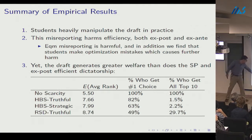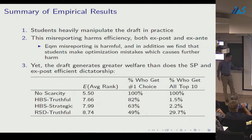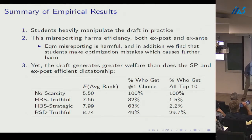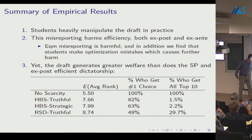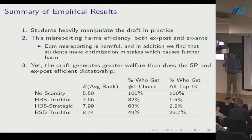Under the random serial dictatorship, average rank rises much further to 8.74, only 49% get their number one choice, and only 30% get their bliss point. This shows the sense in which strategic play harms welfare, and the sense in which the draft nevertheless outperforms the random serial dictatorship. The paper contains numerous other welfare comparisons.